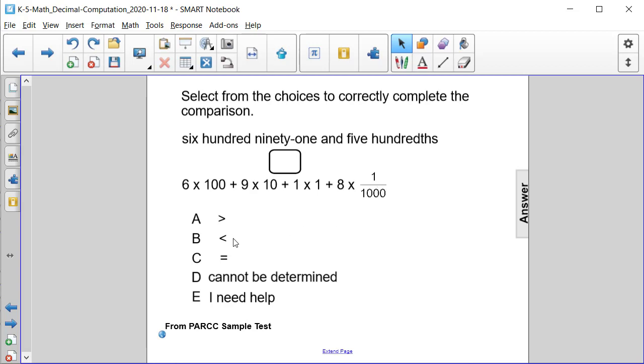Is it A greater than? Is it B less than? Or is it C equal to? Or is it D cannot be determined?